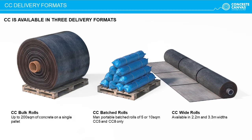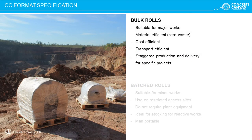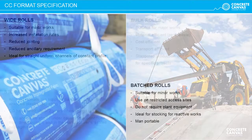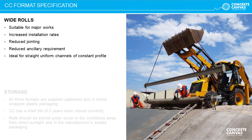Concrete Canvas has been described as concrete on a roll. It is supplied in three roll formats: bulk, batched or wide rolls. Bulk rolls are suitable for large construction projects and are materially efficient — they can be cut to size on-site to reduce wastage and cost. They are also transport efficient and typically supplied in staggered deliveries to match the rate of installation, minimising on-site storage. Batched rolls are man-portable, suitable for smaller works with limited plant or site access, and often stored in reserve at depots for minor reactive works.